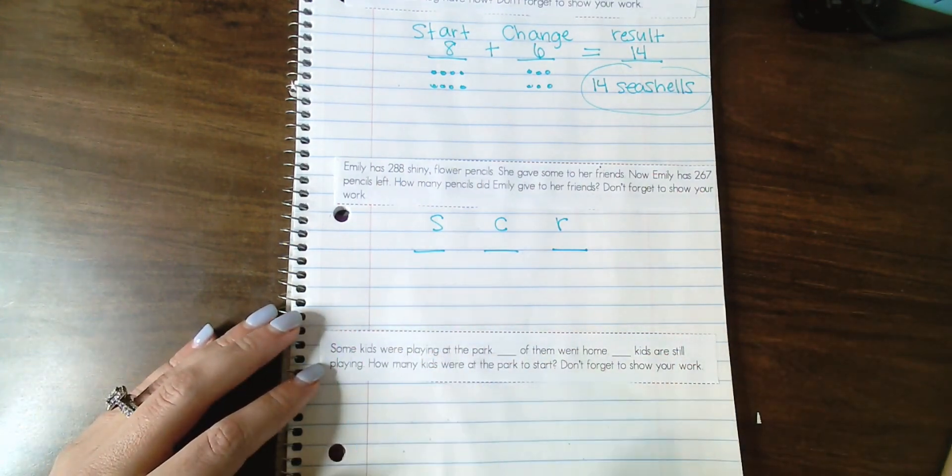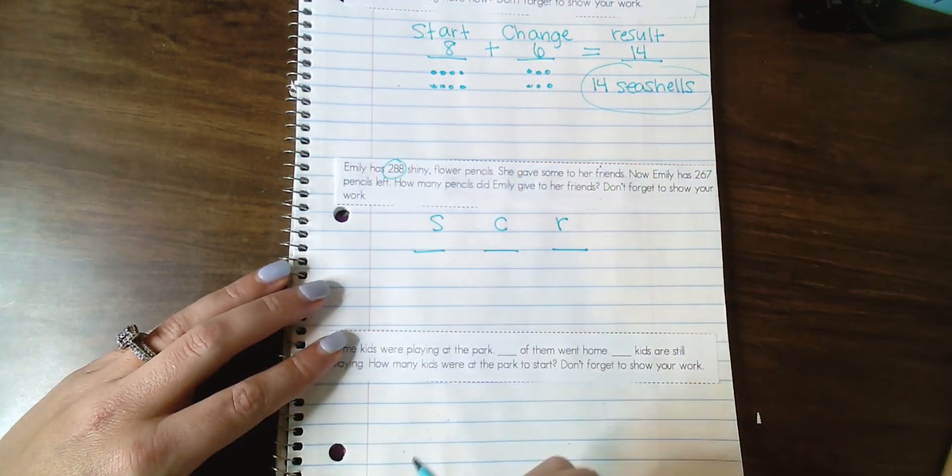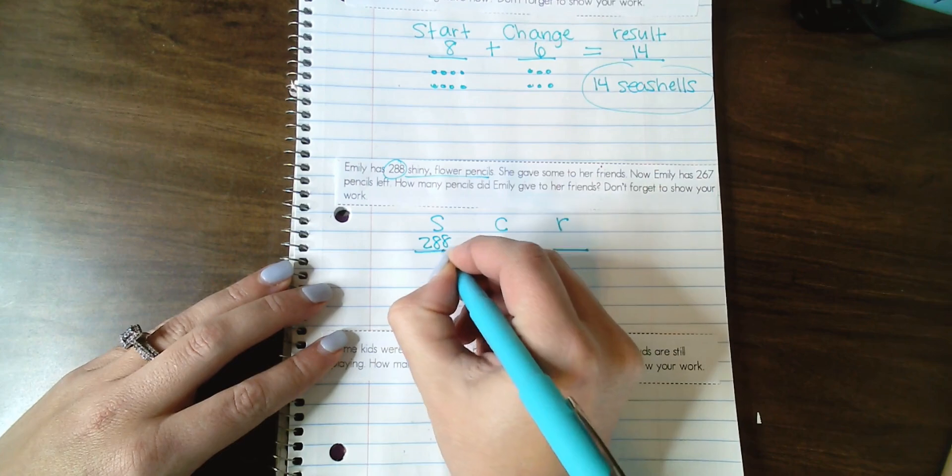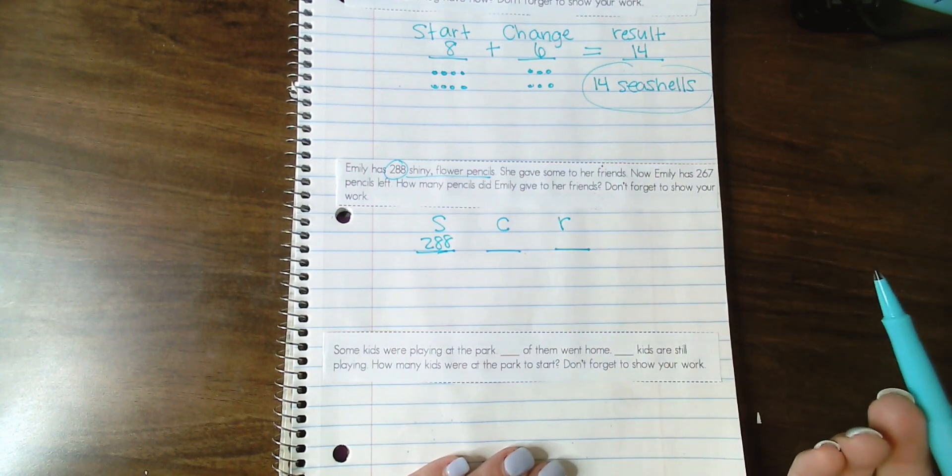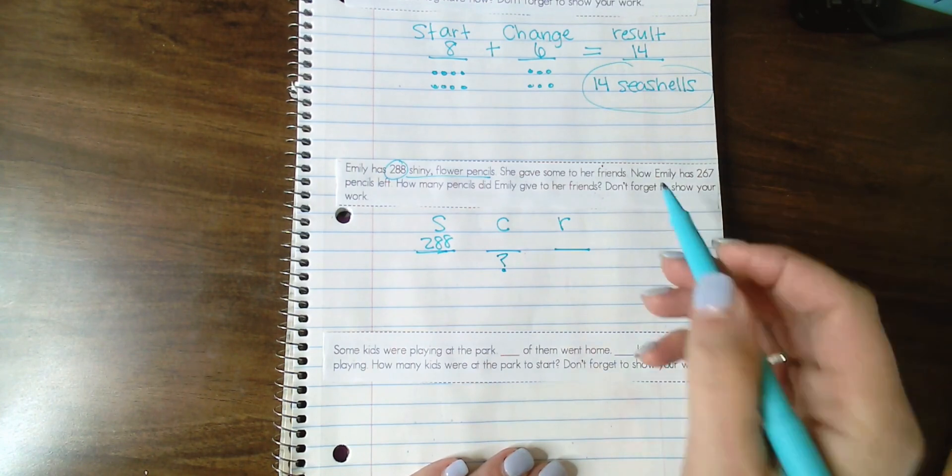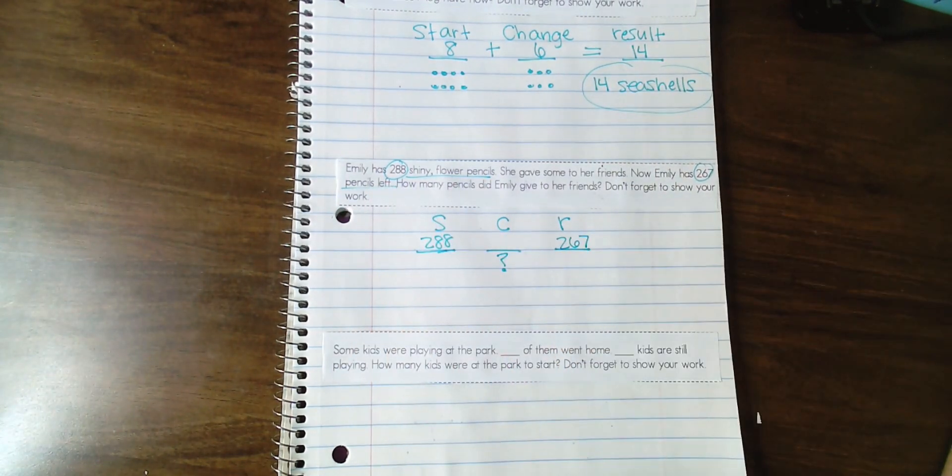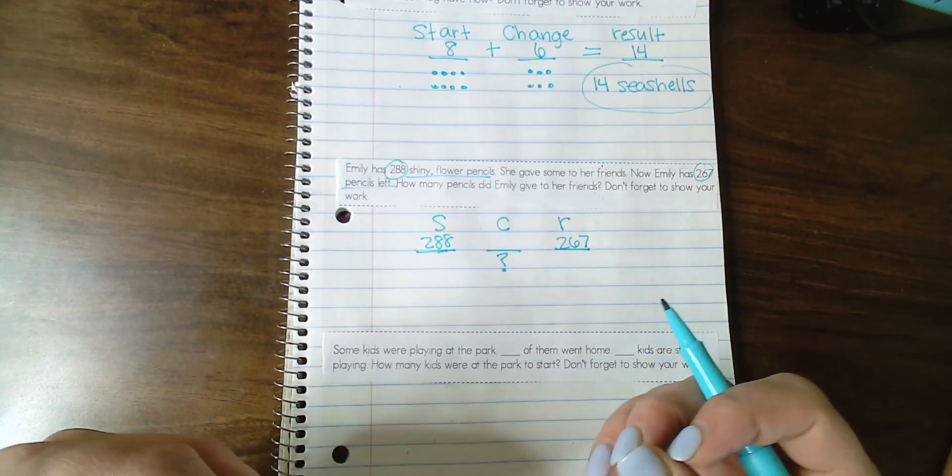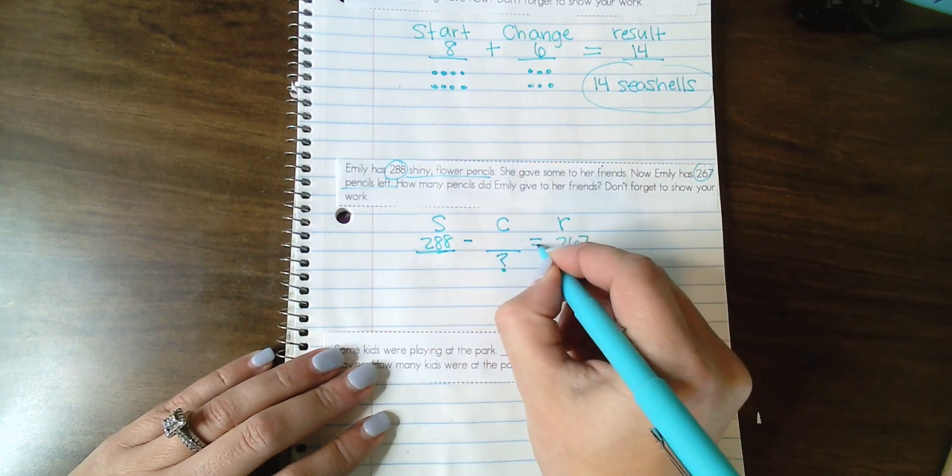So I'm going to say, do we know how many pencils Emily starts with? Yes, we do. We know that she starts out with 288 shiny flower pencils. That is our starting number. We know that she gave some away to her friends. Do we know how many she gave away? We do not, but we know that her starting amount changes. So this is the number we're probably going to have to solve for. And that the ending result is that she has 267 pencils left. Then we're going to talk through the process of if she gave some away to her friends, is she adding more to her pencils or is she taking some away? Some are going away. So we know that we need to set this up as a subtraction problem.